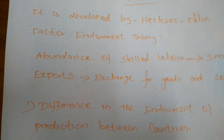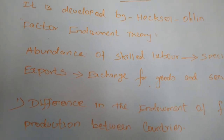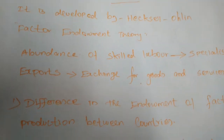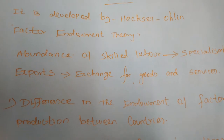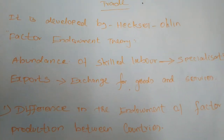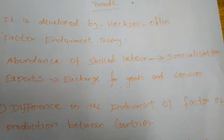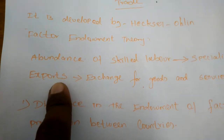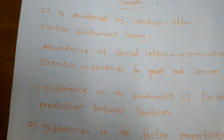According to this theory, the country with relative factor abundance can specialize and trade. A country which has more skilled labor or an abundance of skilled labor will have more specialization, and they can come to trade and export more. The abundance of skilled labor creates specialization to produce in any particular line. If they get the specialization, they can export more commodities.